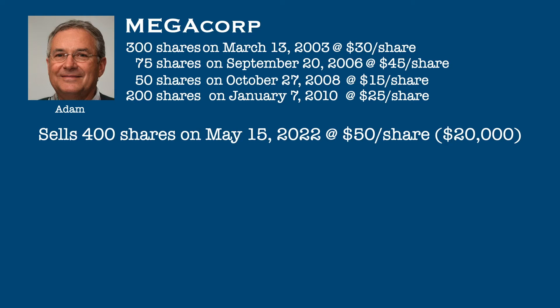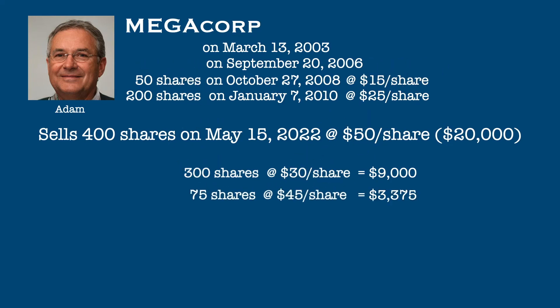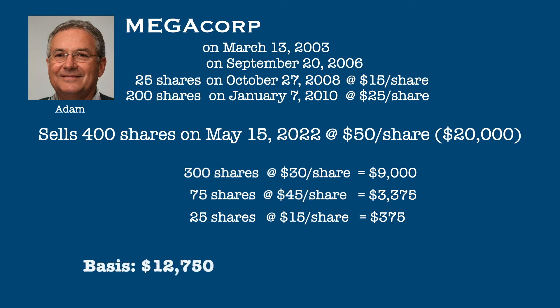Here is how he calculated his basis. First, he takes the 300 shares purchased in 2003 at $30 per share, or $9,000. Then the 75 shares purchased in 2006 at $45 per share, or $3,375. And finally, 25 shares out of the 50 shares he purchased in 2008 at $15 per share, or $375. This gives him a total basis of $12,750, and his capital gain is $7,250.